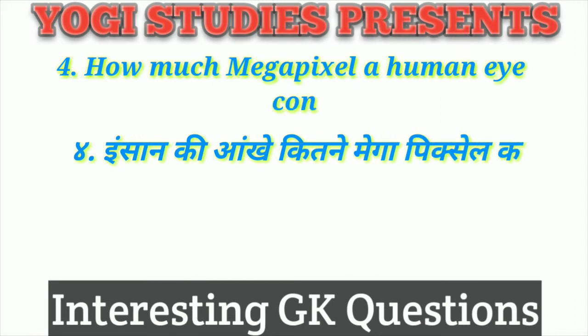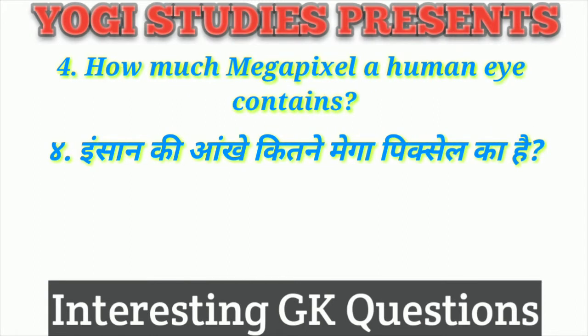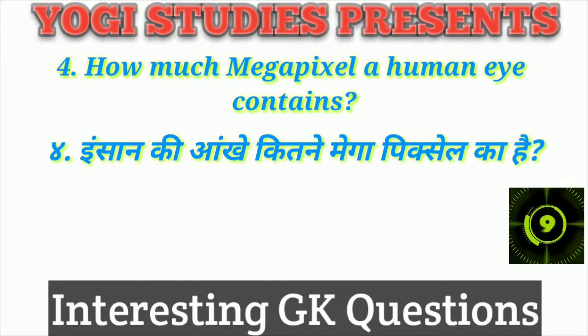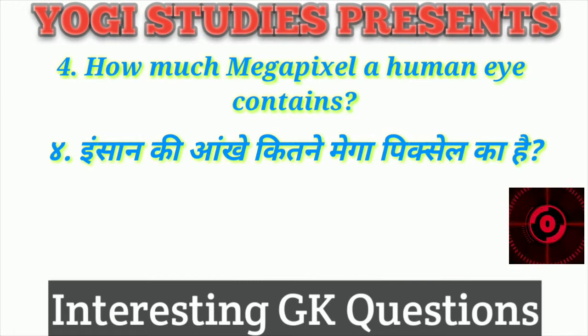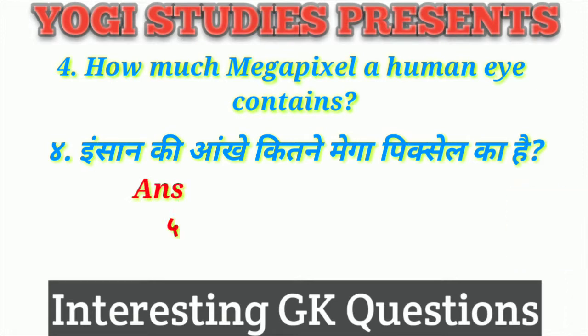Question number four: how many megapixels does a human eye contain? Insaan ki aankhein kitni megapixel ki hain? [Countdown: 10...1] The correct answer is 576 megapixels.